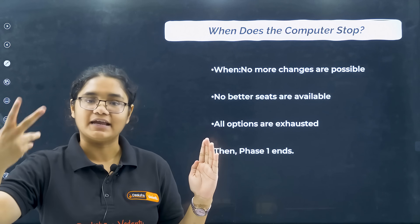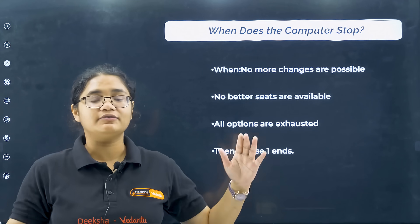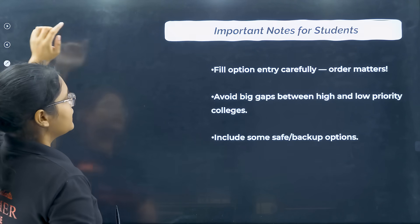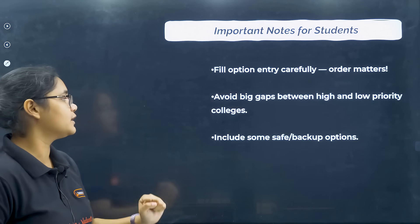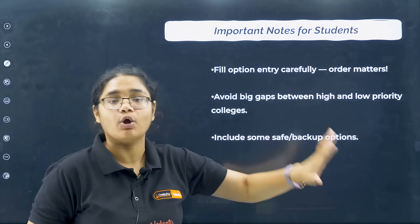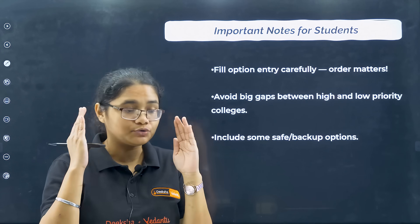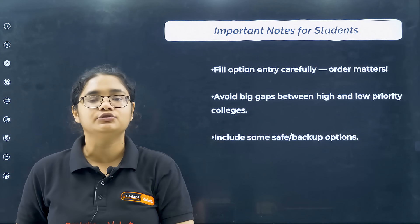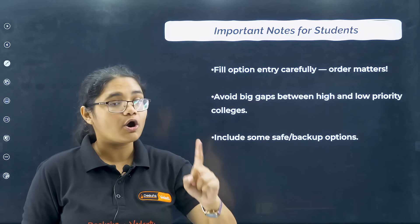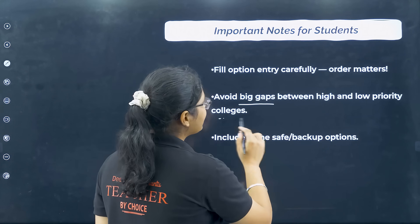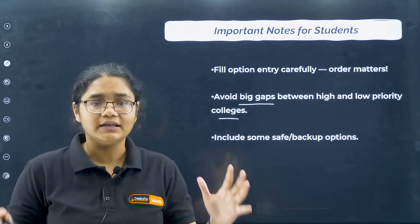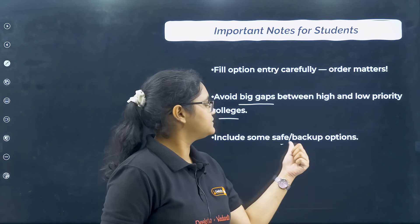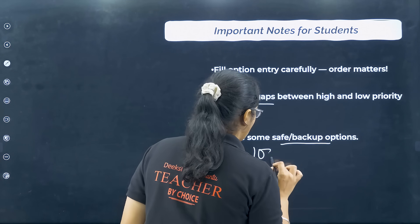Here are important notes for all students. Please fill the option entry very carefully — order matters a lot. The best college and branch you desire most should be at priority number one, the second best at number two, and so on. Avoid big gaps between high-priority and low-priority colleges — give a range. Include safe and backup options; do not skip medium-range colleges.